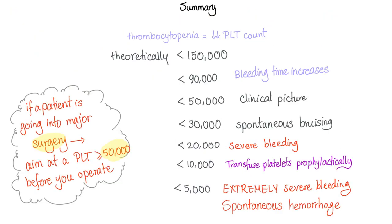Thrombocytopenia is decreased platelet count, theoretically less than 150k. Bleeding times start to increase when it's less than 90k. Less than 50k: clinical picture signs and symptoms. Less than 30k: spontaneous bruising. Less than 20k: severe bleeding. Less than 10k: please transfuse platelets prophylactically with fresh platelets. Less than 5,000: extremely severe bleeding and spontaneous hemorrhage.